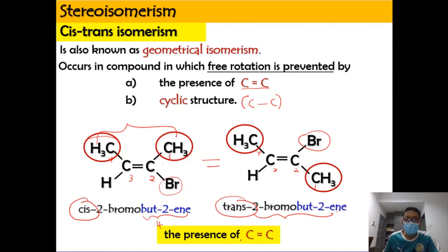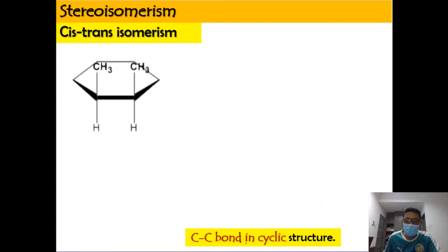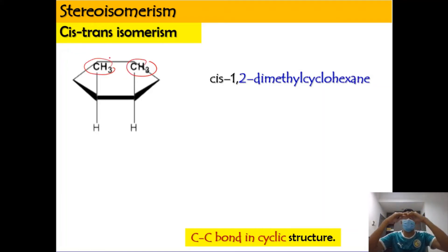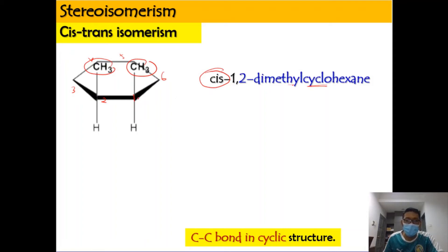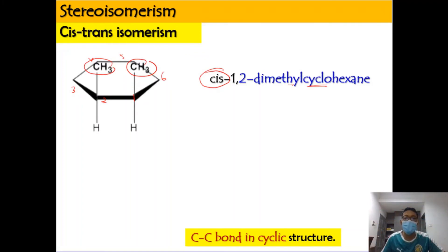Now for the carbon-carbon single bond in a cyclic structure: the CH3 and CH3 groups are on the same layer — the upper layer. Because they are in the same layer, we call it cis. This compound is named cis-1,2-dimethylcyclohexane: it has six carbons in a ring (cyclohexane), two methyl groups (dimethyl), at positions 1 and 2, and they are on the same layer, so it is cis.